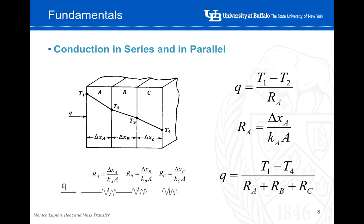When a body has different material compositions, the thermal conductivity and dimensions will differ. We can make an analogy with electrical circuits, considering each section as one thermal resistance and defining heat rate as delta T over thermal resistance. Depending on whether these elements are in series or parallel, we either sum the resistances directly or take the inverse for parallel configurations.